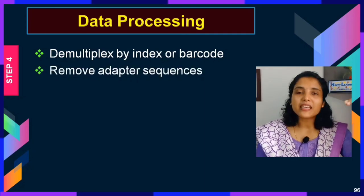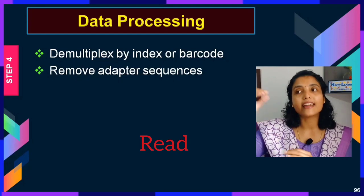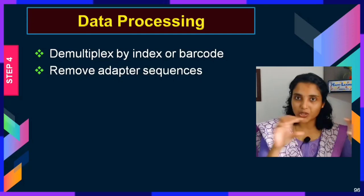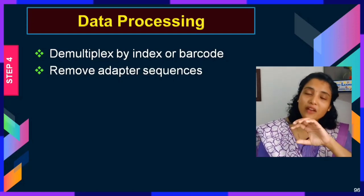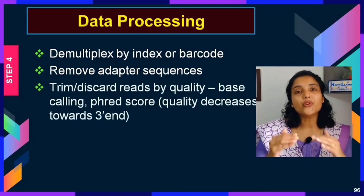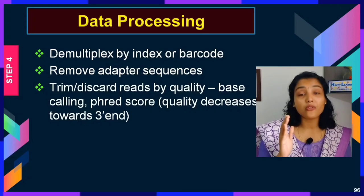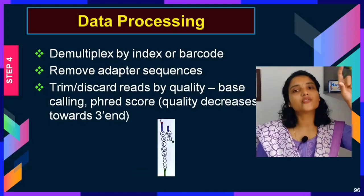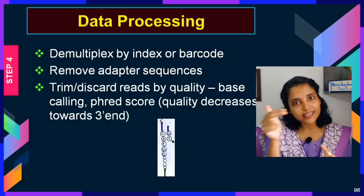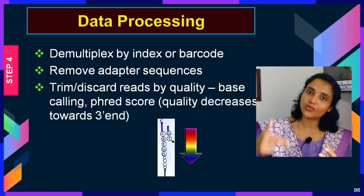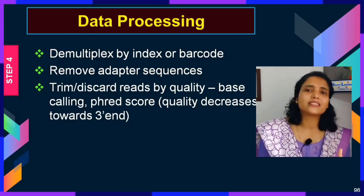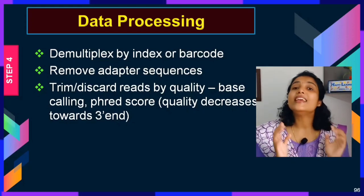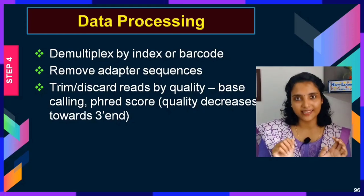Next is removing adapter sequences, since your reads could include sequences from adapters that need to be removed before sequence assembly. You also need to trim or discard reads by quality based on the Phred score. Your actual strand is attached to the adapter on the flow cell at its 5' end, with the 3' end free where the primer binds and sequencing begins. Towards the 3' end of the new strand the Phred score becomes lower, so you need to trim those ends to get a good read.